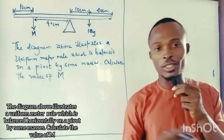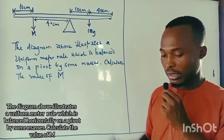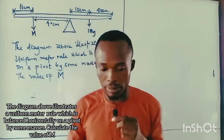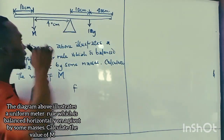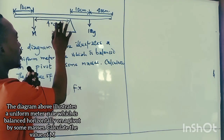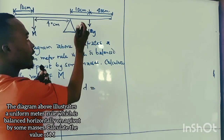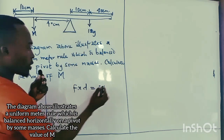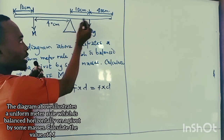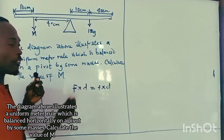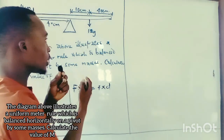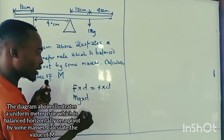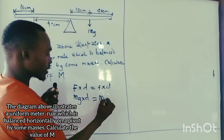In this case, the force is not directly given, so we use the formula for weight. The weight of an object — which is the force it places on the ruler — is mass times gravity. So we can say: mass times gravity times perpendicular distance equals mass times gravity times perpendicular distance for both sides. The masses are different on each side, so we label them M1 and M2, with distances D1 and D2 respectively.